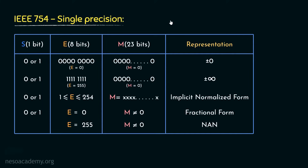Since in the case of IEEE 754 single precision, 32 bits are dedicated for storage of floating point numbers, the sign bit is of 1 bit, the biased exponent is of 8 bits, and the remaining 23 bits represent the mantissa part.